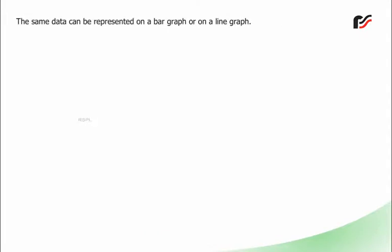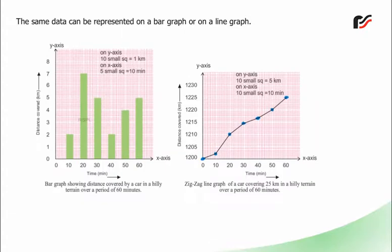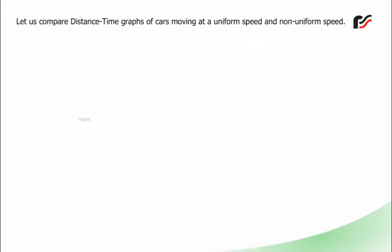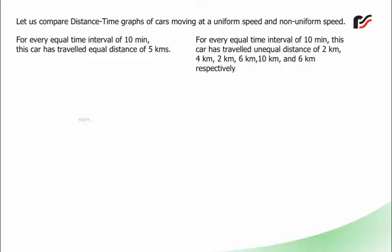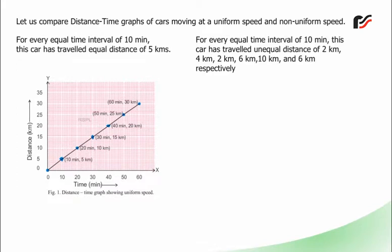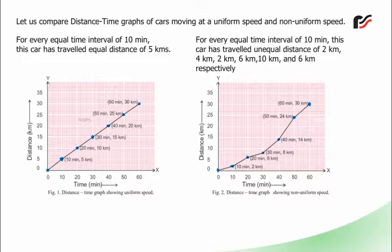The same data can be represented on a bar graph or a line graph. A bar graph and a zig-zag line graph both show a car covering 25 km over 60 minutes. Let us compare distance-time graphs of cars moving at uniform speed and non-uniform speed. For every equal time interval of 10 minutes, the first car travels an equal distance of 5 km. For the second car, it travels unequal distances of 2 km, 4 km, 2 km, 6 km, 10 km and 6 km respectively. Figure 1 shows a distance-time graph for uniform speed; Figure 2 shows one for non-uniform speed.